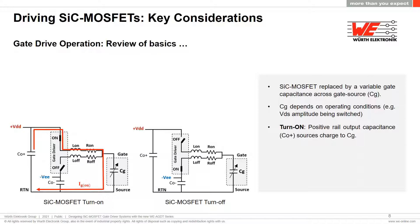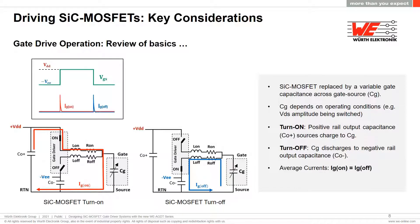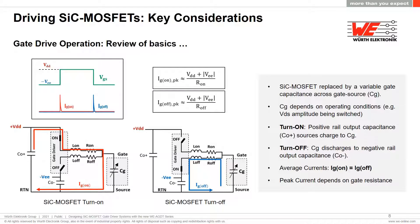During turn-on of the SiC MOSFET, the high side transistor of the gate driver conducts and the output capacitance of the positive voltage rail charges the gate-source capacitance of the SiC MOSFET to +VDD. During turn-off, the low side transistor conducts and the gate capacitance is charged to the negative voltage level -VEE. The average current on the positive and negative output rails is the same since the same amount of charge flows during turn-on and turn-off. The peak current depends on the gate resistance and the delta between positive and negative voltage rails. The switching speed depends on how fast the gate capacitance is charged and discharged — higher peak gate current allows for faster switching transitions.